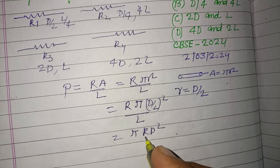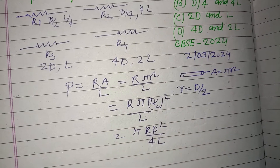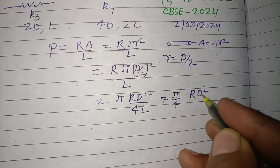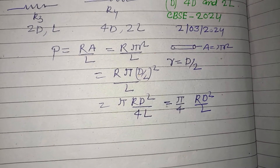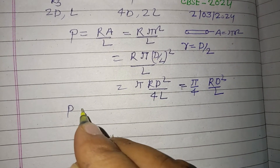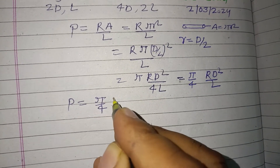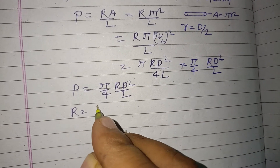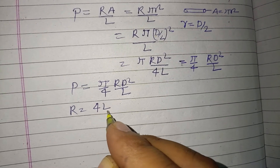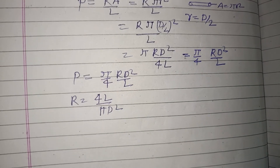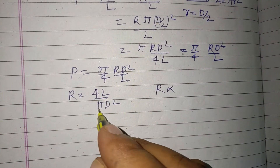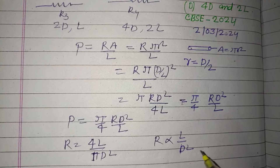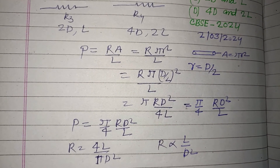Simplifying, ρ = π/4 · R · D²/L, which gives us R = 4ρL / (πD²). Therefore, resistance R is directly proportional to L/D².